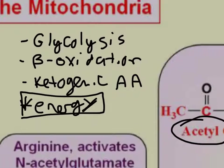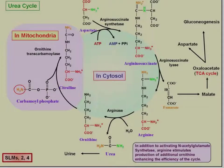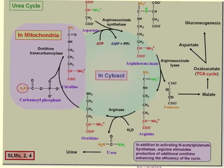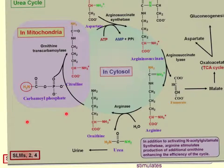Ammonia and bicarbonate come together at the expense of two ATPs to form carbamoyl phosphate — that happens in the mitochondria. Ornithine transcarbamylase then combines carbamoyl phosphate with ornithine to produce citrulline, also in the mitochondria. After that, citrulline is exported to the cytosol and the rest of the reaction occurs there.